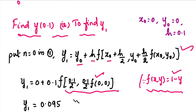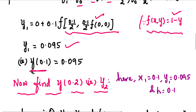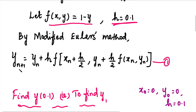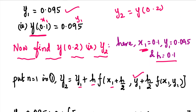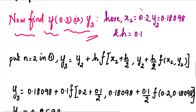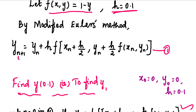Now y1 is y(0.1), and we can use y2 as y(0.2). We substitute these into the formula, giving us y1 with x1. We substitute all values into the right-hand side and simplify. Similarly for the third step using x1 node. We cannot directly substitute the y3 value without completing the right-hand side.